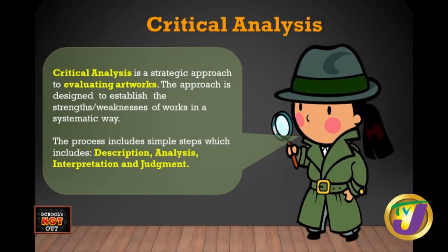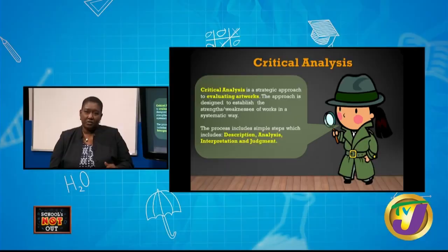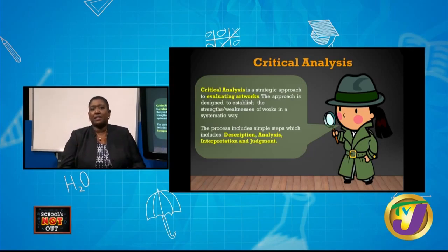The next thing we're going to look at in the journal is the critical analysis. The critical analysis is basically a constructive and strategic way of evaluating artworks — pulling the artwork apart into bits and pieces so as to make sense of each piece and properly evaluate what is happening. It has four simple steps: you describe, you analyze, you interpret, and you judge. When you're doing the description, you want to state only facts about the artwork — as if you're trying to describe a piece of work to someone who cannot see it.